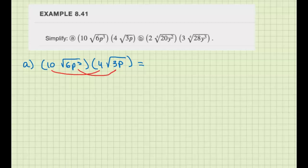I have 10 times 4 is 40√18p⁴. Now we want to simplify this. 18 is not a perfect square, but I can write it as 9 times 2, and p⁴ is good because 4 divides by 2 exactly.